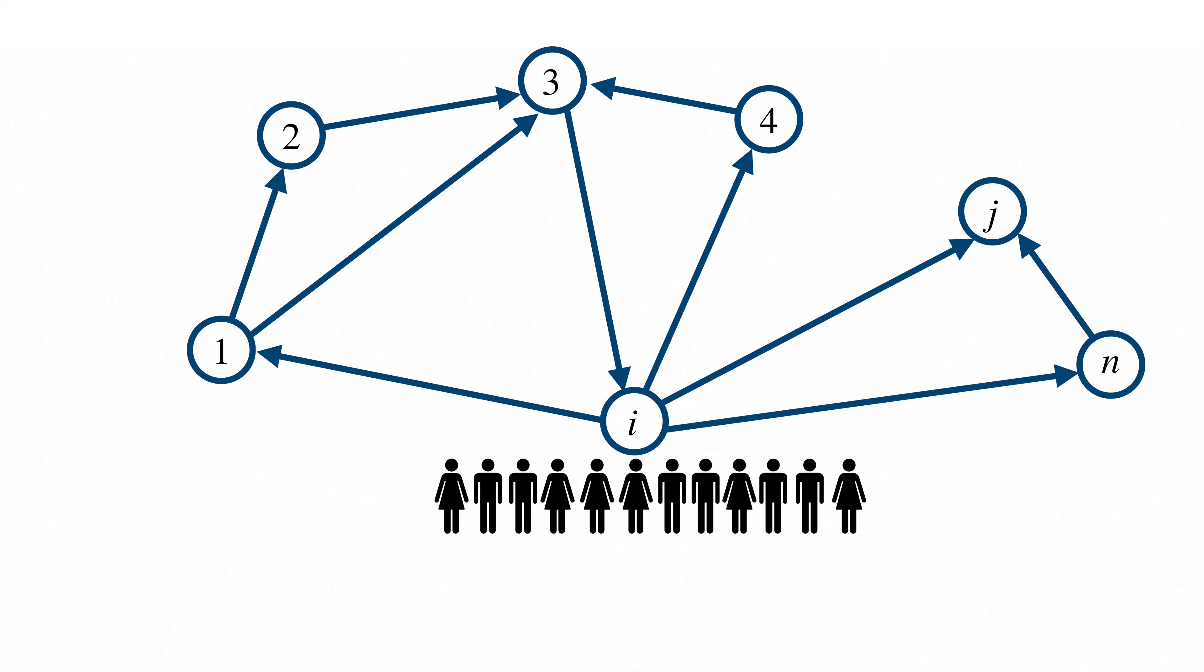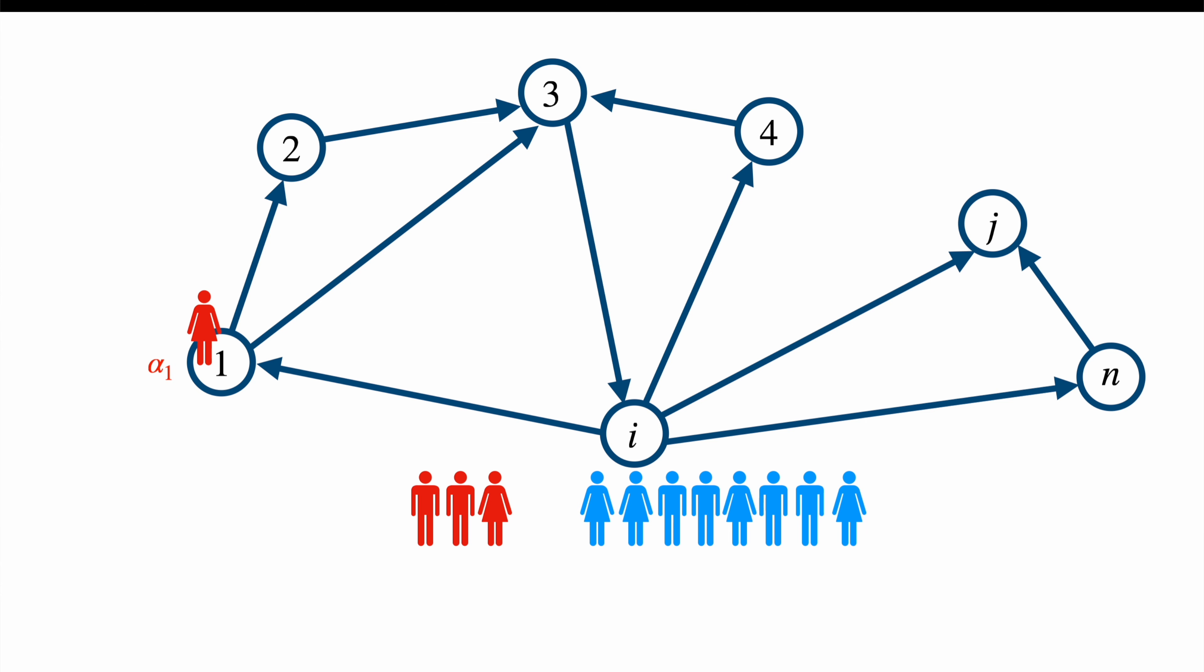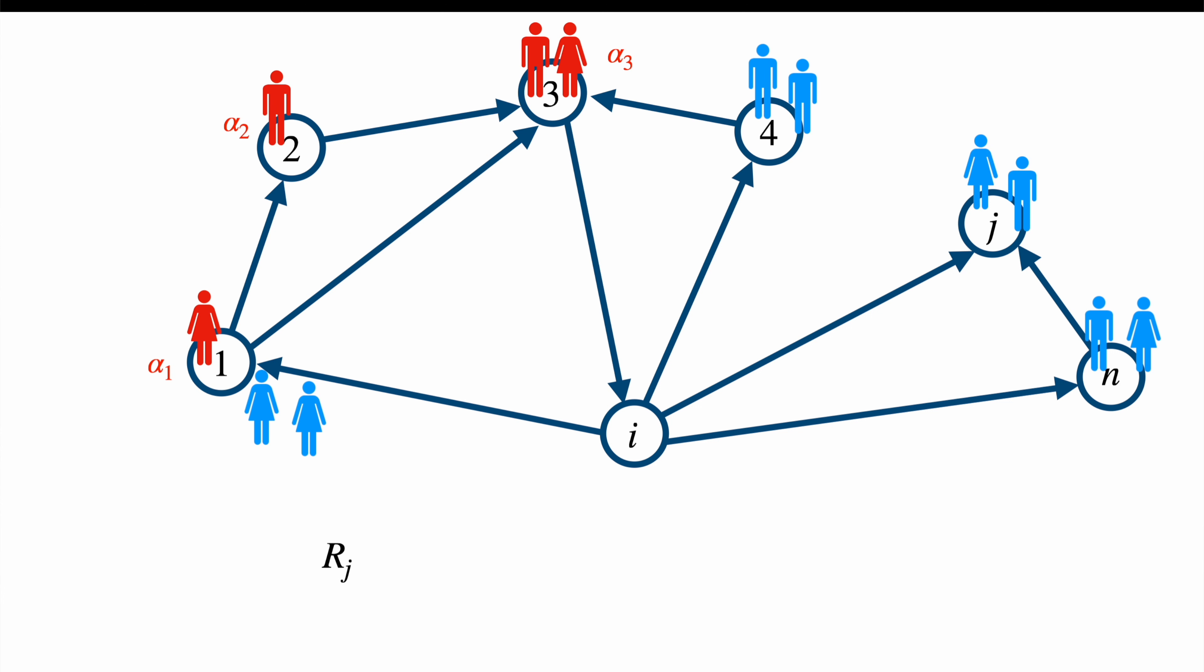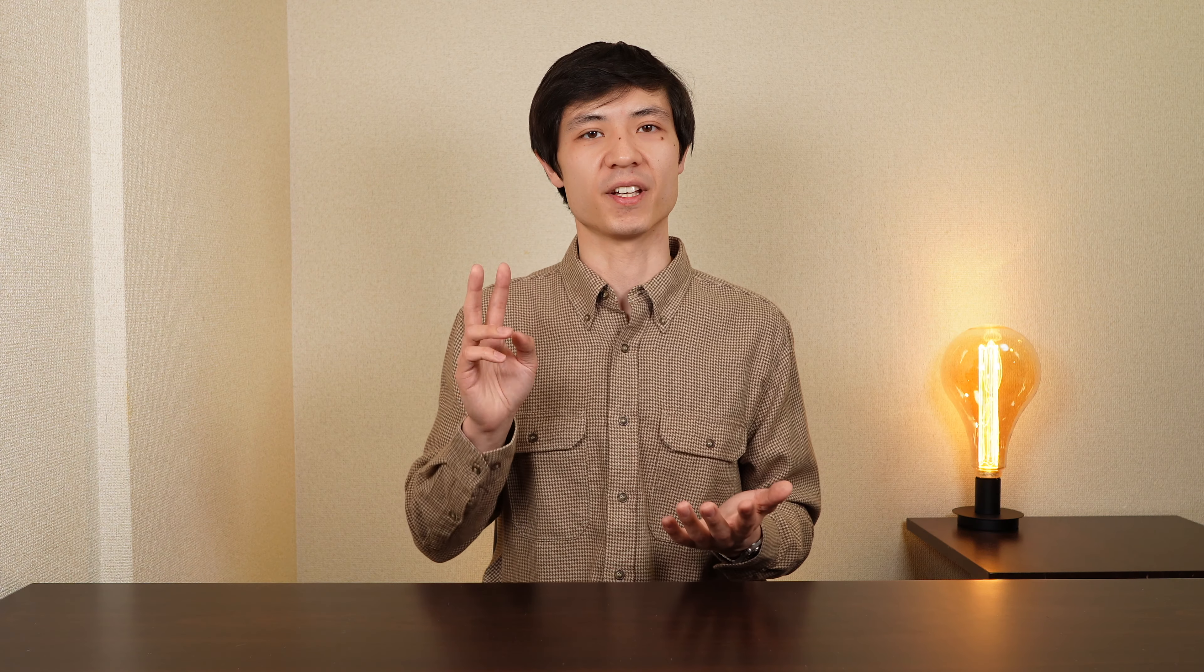To avoid the problem, we add a little penalization epsilon alpha j and the formula becomes this. The idea behind it is that alpha 1 to alpha n is a probability vector on the web pages called the teleportation distribution. Each web page i releases a fraction epsilon of its visitors who will be teleported to page 1 with probability alpha 1 to page 2 with probability alpha 2 and so on. The remaining 1 minus epsilon fraction of visitors of page i simply follow the edges page i points to as described before. The total number of visitors or rating rj of page j is hence defined as the number of visitors who come from other pages links plus the number of visitors who are directly teleported to the web page j.